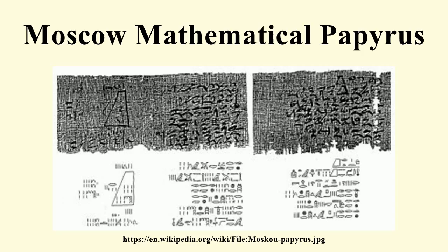Problem 10: The 10th problem of the Moscow Mathematical Papyrus asks for a calculation of the surface area of a hemisphere, or possibly the area of a semi-cylinder. Below we assume that the problem refers to the area of a hemisphere. The text of problem 10 runs like this: "Example of calculating a basket. You are given a basket with a mouth of 4 and a half. What is its surface? Take 1 ninth of 9. The basket is half an eggshell."